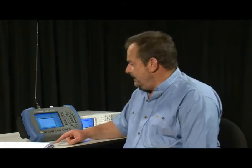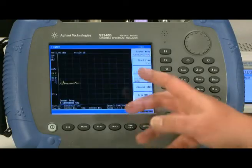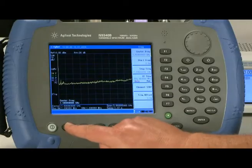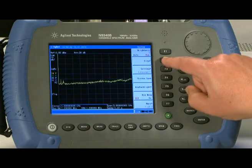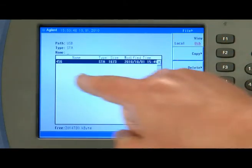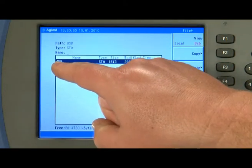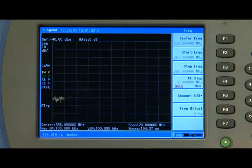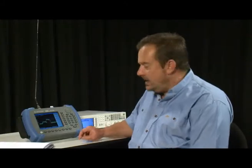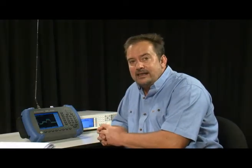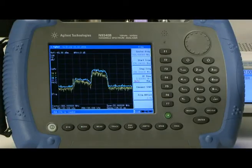Now let's say we have gone out on site and we want to recall that setup. Let me first of all preset the instrument to put it back to its factory default state. Then what I will do is I will press the system button and then file and if I change the view to the USB memory stick you can see here our file, our setup saved as 456. If I now press load now you can see immediately the whole instrument has been reconfigured to exactly the same setup that I had for the previous measurement of this base station.